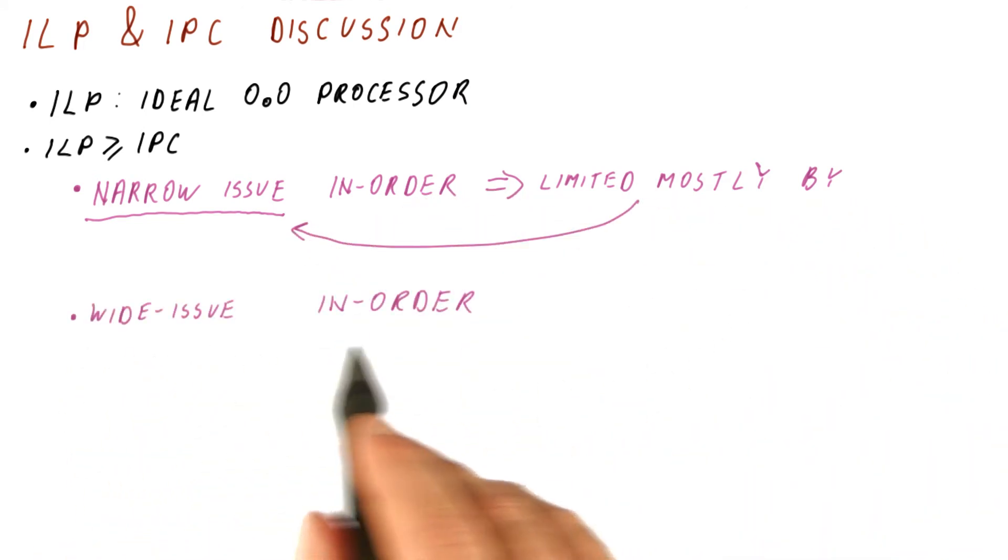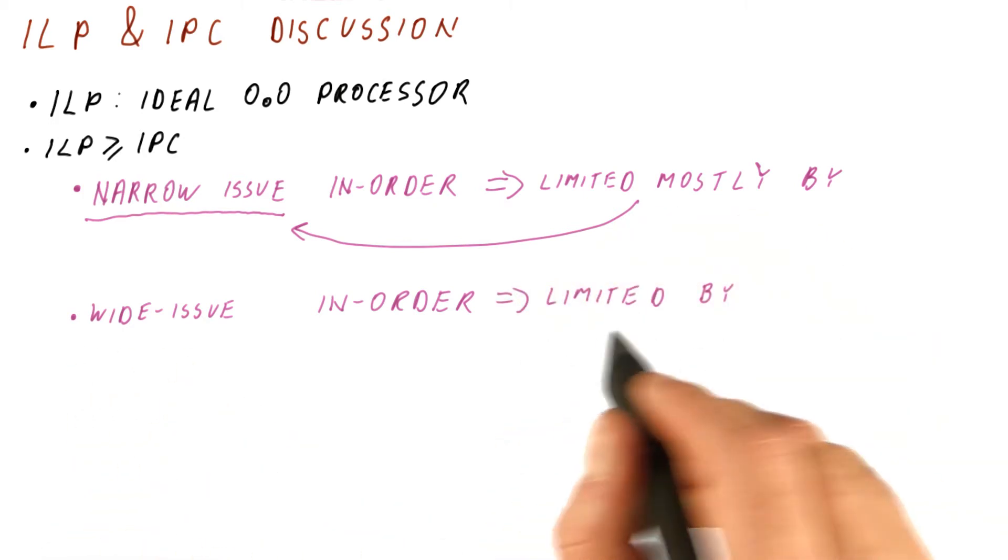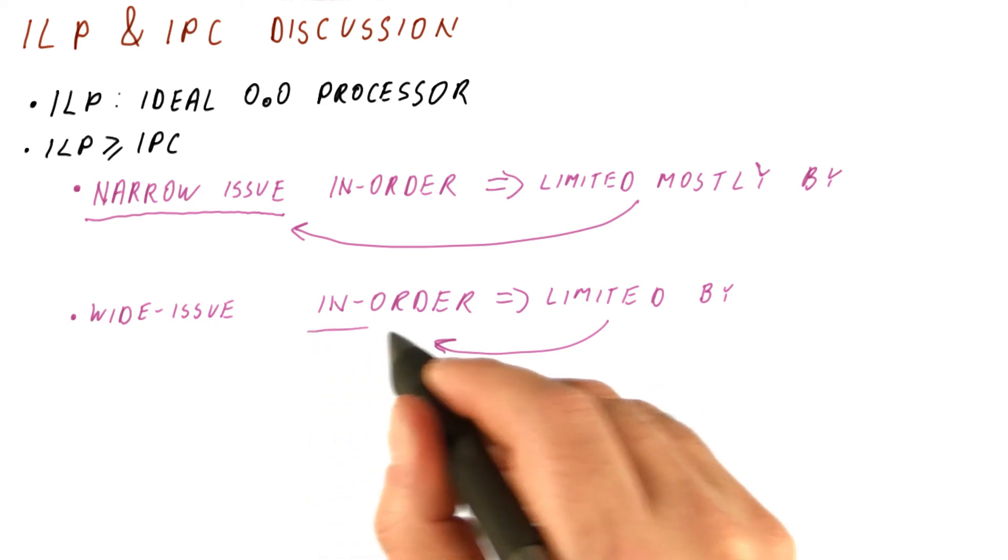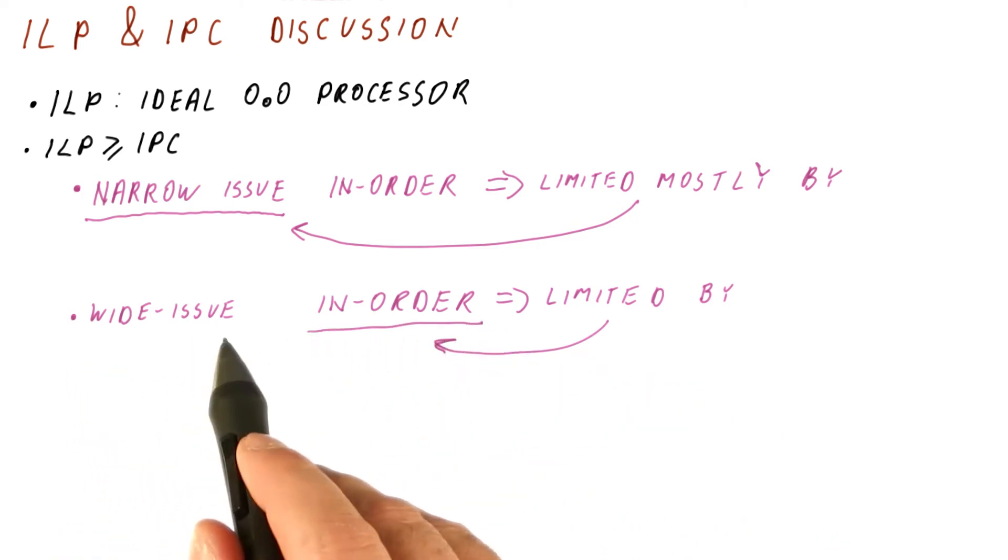However, if we have a wide-issue in-order processor, meaning it can do more instructions per cycle, it's going to be limited mostly by the in-order property, because this is going to allow it to do a lot of instructions per cycle.